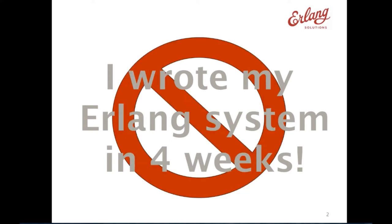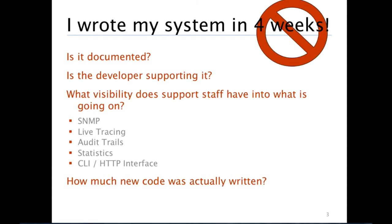There's nothing wrong with getting a system out in four weeks, but the big question is what happens once you've gone live? We've run projects where documentation alone took months to write. Is the developer supporting the system the one who gets woken up in the middle of the night when issues arise? How do you know you are experiencing issues in the first place? Is it the result of your customers calling in saying they can't access the service, or have operations already been working on it trying to resolve it?